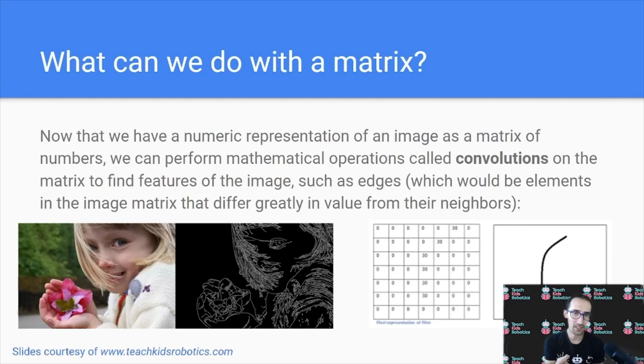So what can we do once we have this matrix? This mathematical representation of the real world, or an image, known as this matrix, allows us to perform operations known as convolutions on the matrix to identify different features of the image, such as edges.